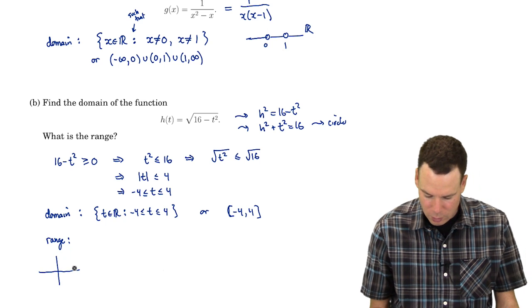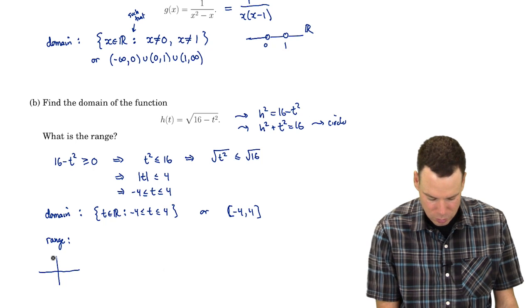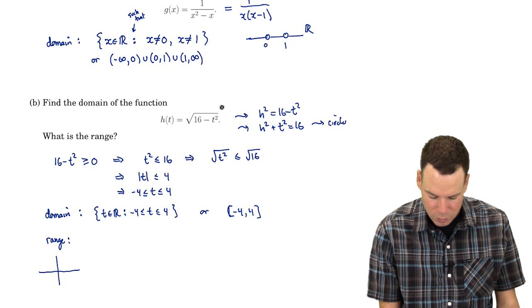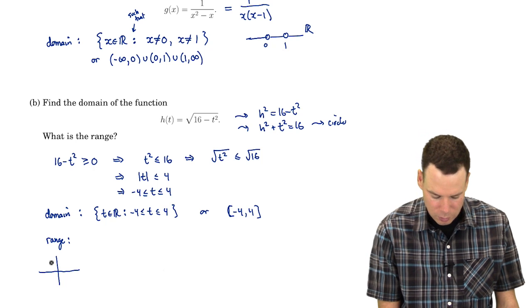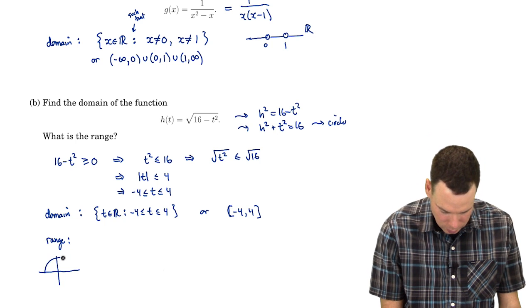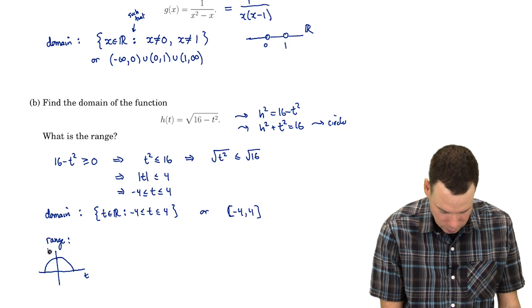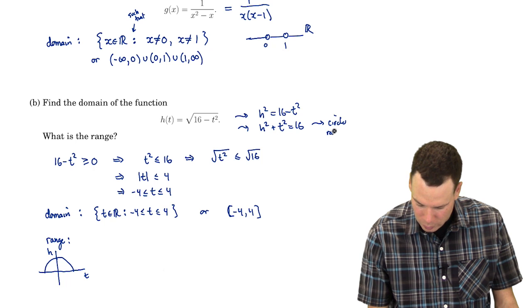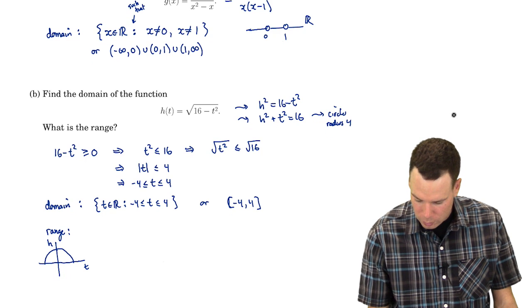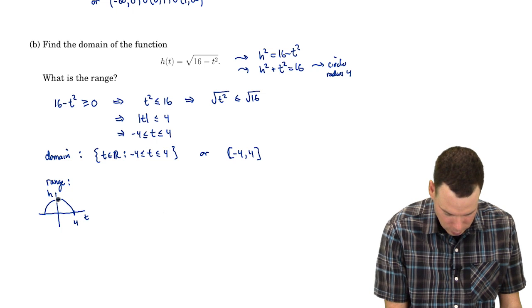The set of all (h, t) values satisfying this equation is a circle, but for the function I only keep the positive h values because I'm looking at the positive square root. So the graph is an upper semicircle. There's the t-axis, the h-axis, and it's an upper semicircle with radius 4.